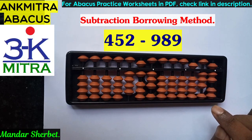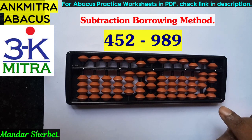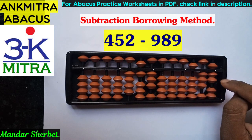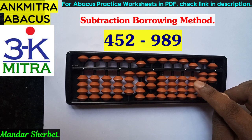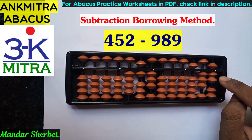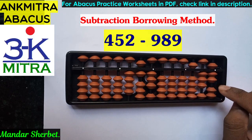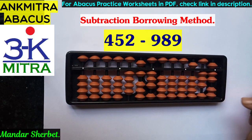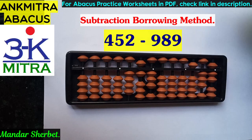The final answer for 452 minus 989 is negative 537 — that is, minus 537. This is our final answer, and this is how we can use the subtraction borrowing method in any situation.